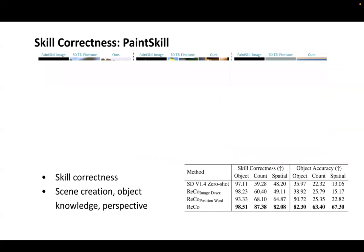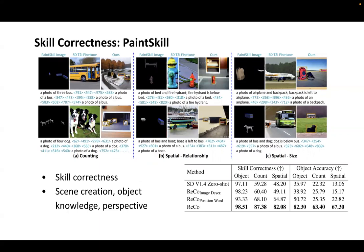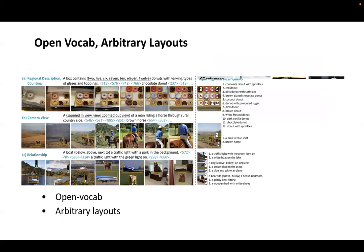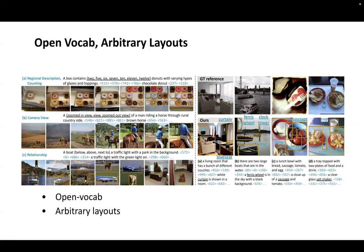Other than COCO, we also evaluate on other output distribution data and our uncurated samples. We use PinkSkill to evaluate skill correctness — whether the model can generate the queried object type, count, and spatial relationship — with a human evaluation showing more than 50% improvement. This also reviews RECO's knowledge of scene common sense, such as object knowledge that a bed is usually indoors and camera perspective for relative object size. We challenged RECO with open vocabulary regional descriptions and manually designed challenging queries, and it also managed to work reasonably well.